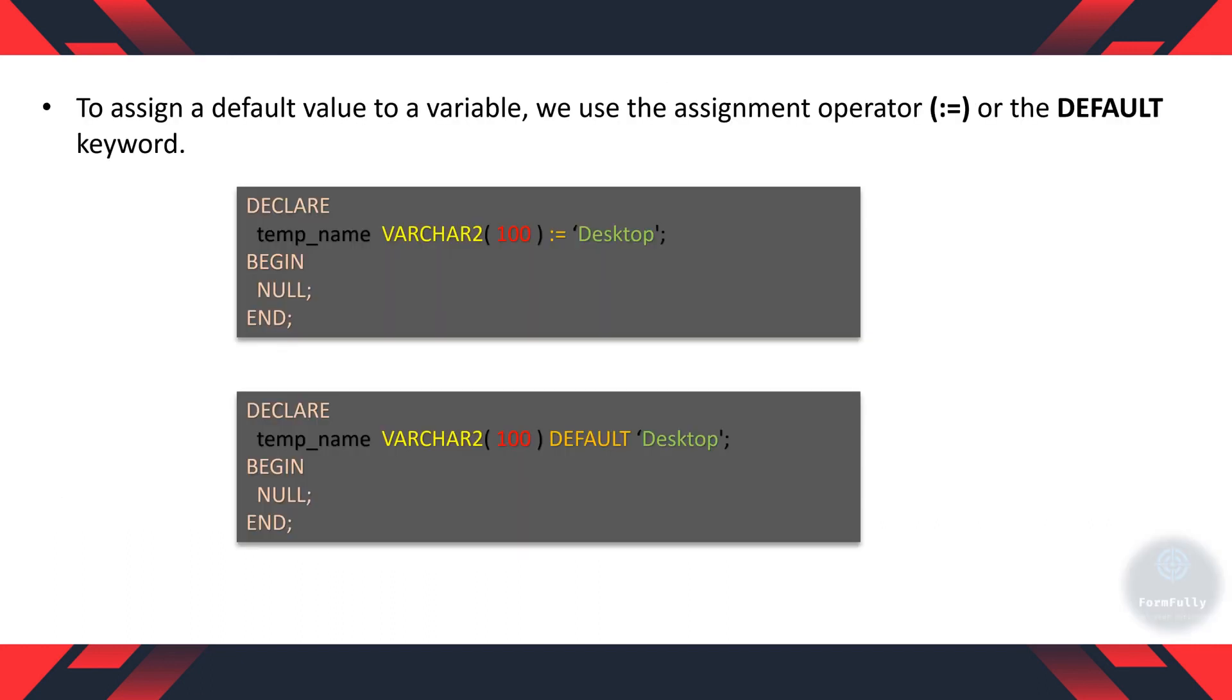To assign a default value to a variable we use assignment operator or the default keyword. In first snippet you can see we have assigned a desktop as a text value into a temp name variable using assignment operator. And in a second snippet the same text value is assigned through a default keyword.